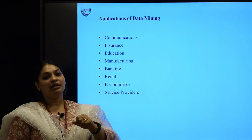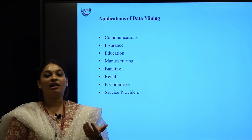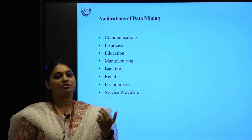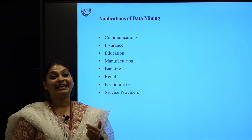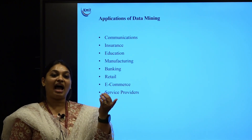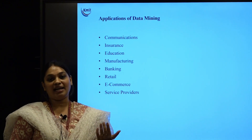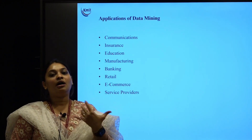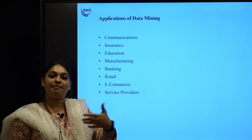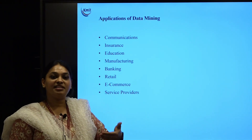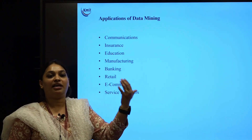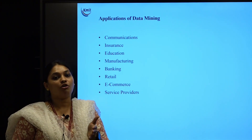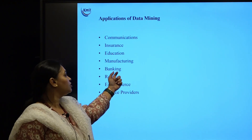Then comes retail — online shopping, mom-and-pop stores, or grocery stores. For a small mom-and-pop store near your house, the shopkeeper purchases items based on the locality and people's demands. For example, if 10 houses repeatedly ask for the same Colgate toothpaste, the store owner orders more from the manufacturer or dealer because the demand for that product is high in that area.